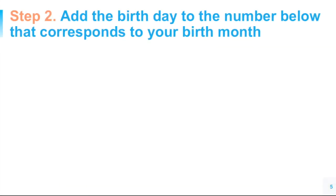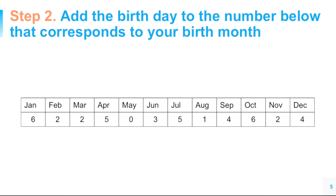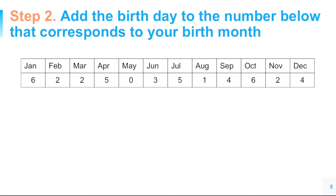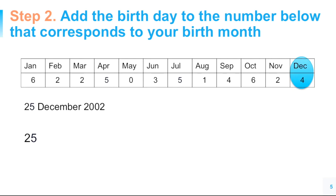Step two: add the birthday to the number below that corresponds to your birth month. Plus.maths.org came up with this table — the mathematicians behind this are very awesome. So we follow this table. Since our example is my daughter's birthday, 25th of December 2002, we add the birthday, which is 25, to the number corresponding to December, which is plus 4, giving us 29.